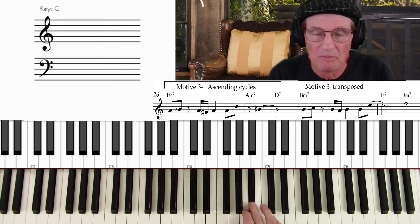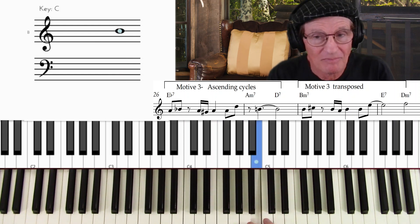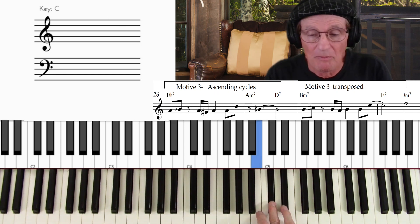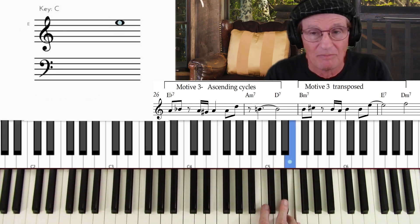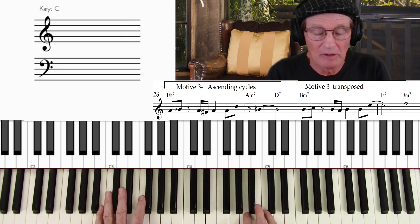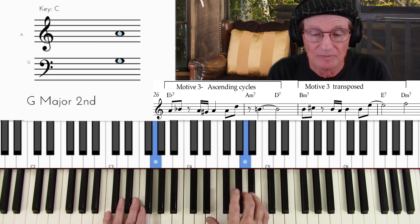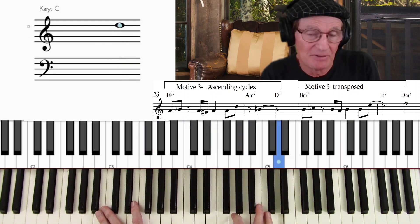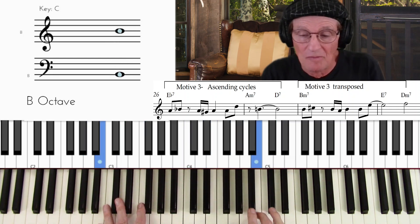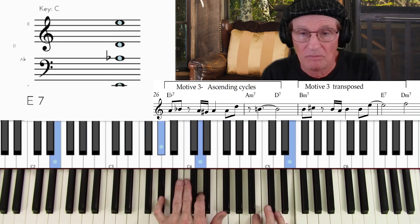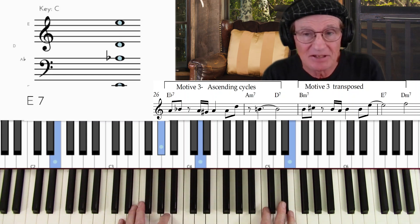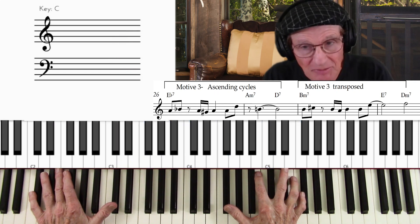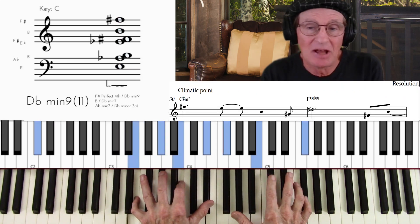Now, here's motive number three. So here's a new idea, okay? And it's repeated up a whole step. Like that. So there's a new idea. So this is... And the chord is E flat to A minor. There's that 11th again.